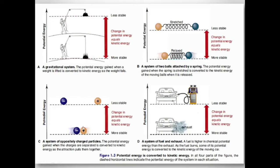Another example: opposite charges — negative and positive — have strong potential energy when held apart. Once they attract each other, that potential energy converts to kinetic energy. Similarly, fuel is high in chemical potential energy; when you use it to run an engine, that potential energy converts to kinetic energy, causing your car to move.